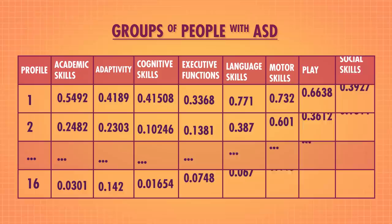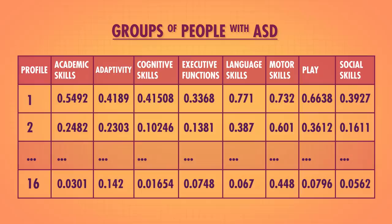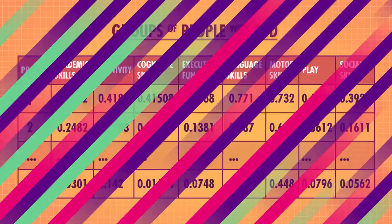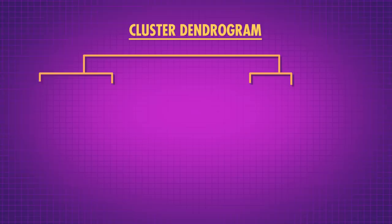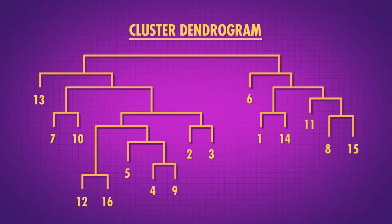A group at Chapman University set out to look more closely at groups of people with ASD. They started with 16 profiles representing different groups of people with an ASD diagnosis. Each profile has a score between 0 and 1 on 8 different developmental domains — low scores in one of these domains means it might need improvement. Unlike our pizza example which only had two measurements, this time we have 8 measurements. The researchers took all 16 profiles, put each one in their own cluster, then started combining clusters that are close together, and kept going until every profile was in one big cluster.